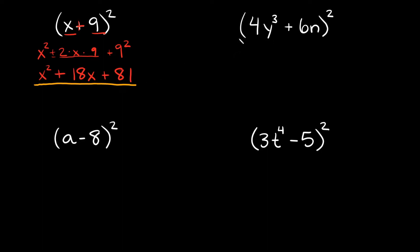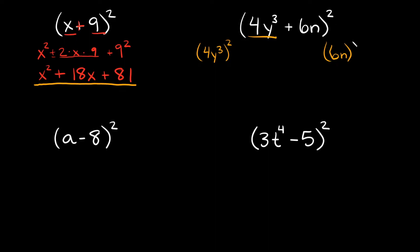Let's go to this next example. So as you can see, we're adding two terms together: 4y cubed plus 6n in parentheses, and then we're squaring that whole thing. So all you have to do is take your first term and square it. So 4y cubed squared, and then my last term is 6n, and we're also going to square this one. If you want, you can throw both of your plus signs right there, and then in the middle we're going to have two times the first term — which is 4y cubed — times the last term, which is 6n.